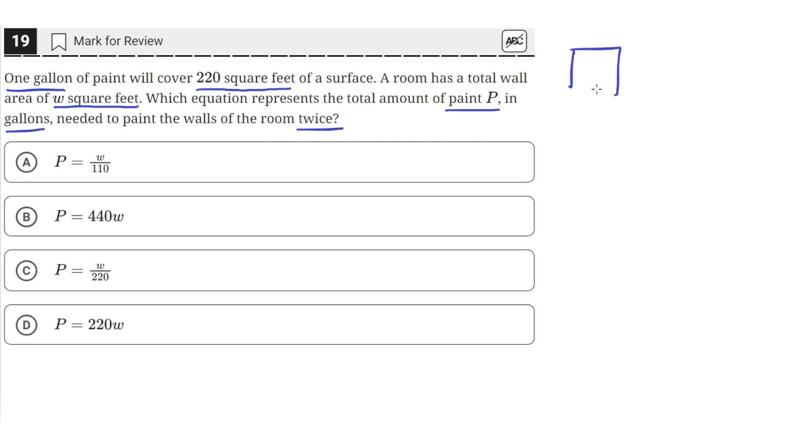So we have a wall and its area is W square feet. And we need to paint this wall twice. So that means the total amount of area we have to cover is 2W.